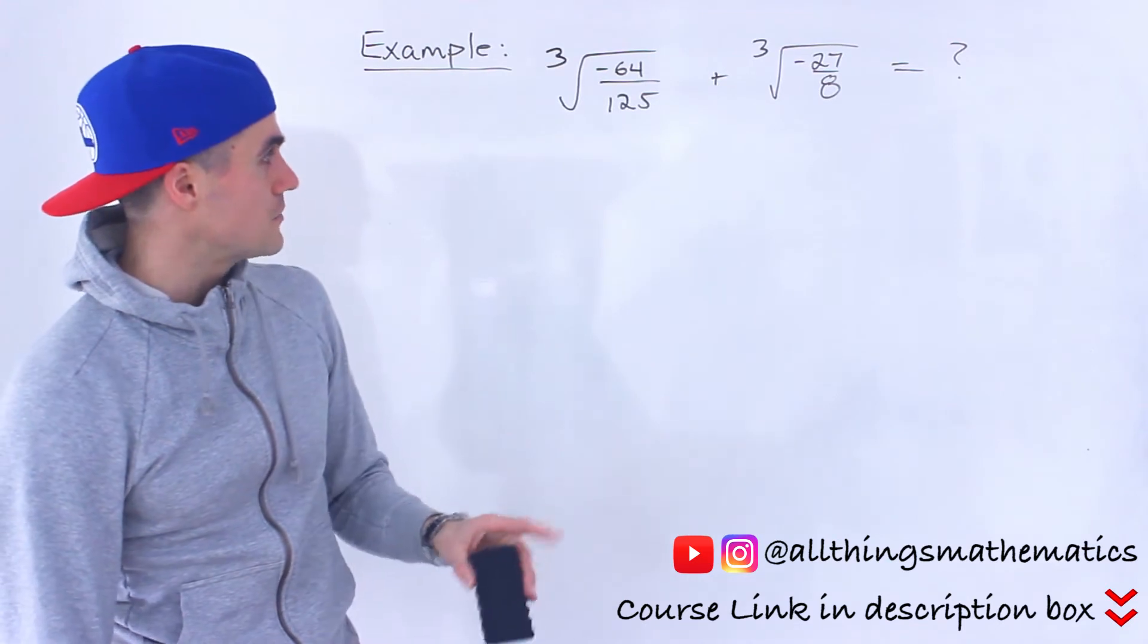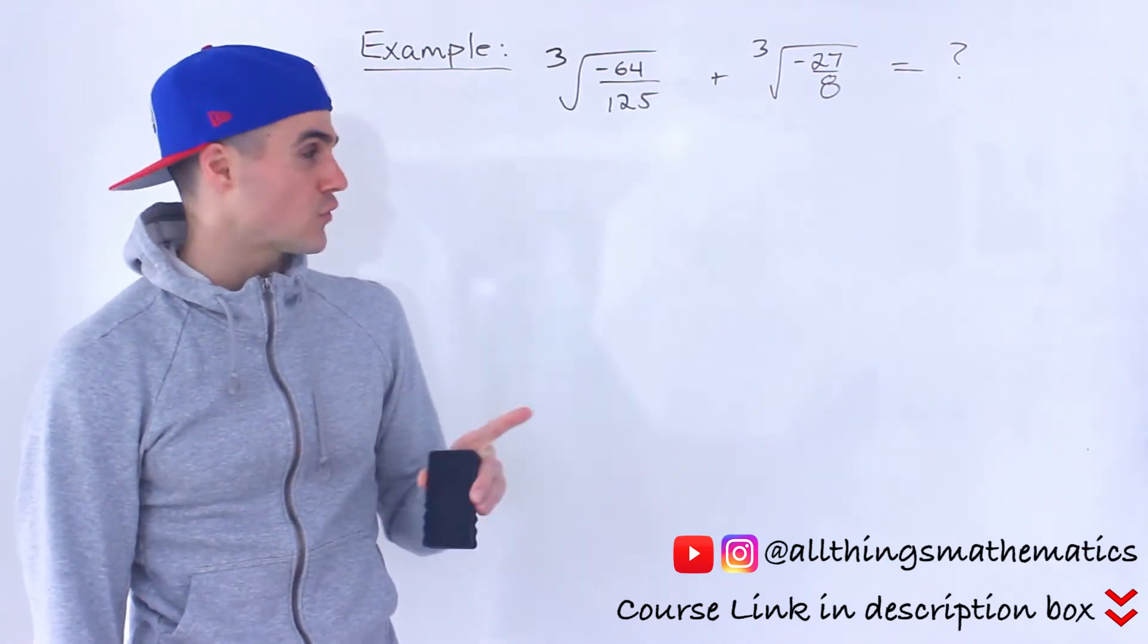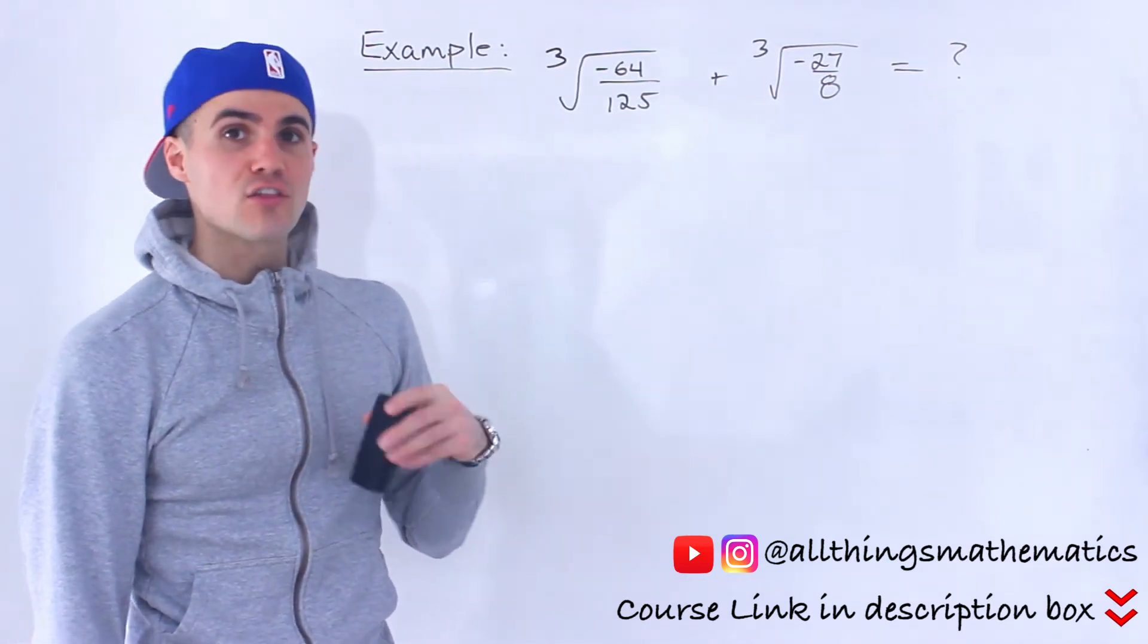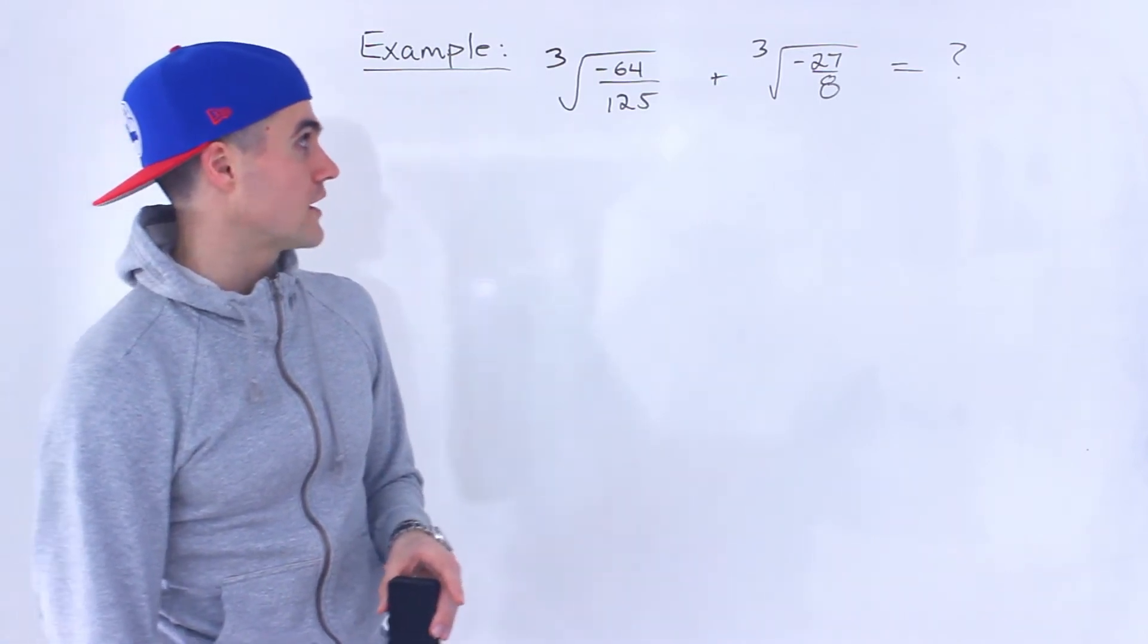We have to figure out what this sum is here. The third root of negative 64 over 125 plus the third root of negative 27 over 8.